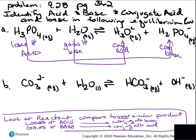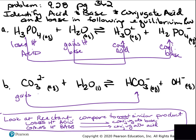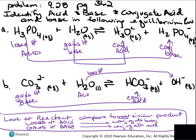For the bottom reaction: CO₃²⁻ — what looks most like CO₃²⁻? HCO₃⁻. What happens to CO₃²⁻? Comparing the reactant side to the product side, you see that it gains a hydrogen ion in the forward reaction, which means it is a base. That means HCO₃⁻ is the conjugate acid. Then looking at H₂O — OH⁻ is most like H₂O. H₂O loses a hydrogen ion and becomes a hydroxide ion, so that means it is an acid, and OH⁻ is the conjugate base.